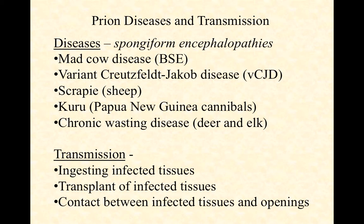Transmission occurs primarily by ingesting infected tissues, but also through transplants of infected tissues carrying prions, or contact between infected tissues and open wounds — for example, someone cleaning a deer with a cut on their hand covered in blood might pick up the prion without even noticing. So to summarize: viroids are infectious RNA molecules affecting plants, and prions are infectious proteins affecting various animals, including humans. Learn them well.